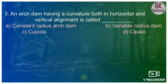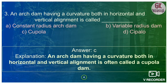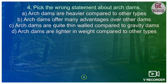Question 3: an arc dam having curvature both in horizontal and vertical alignment is called what? Options are constant radius arc dam, variable radius dam, dipole dam, or cupola/Cipolla. A dam with curvature in both horizontal and vertical alignment is known as a cupola dam. So option D is the correct answer.